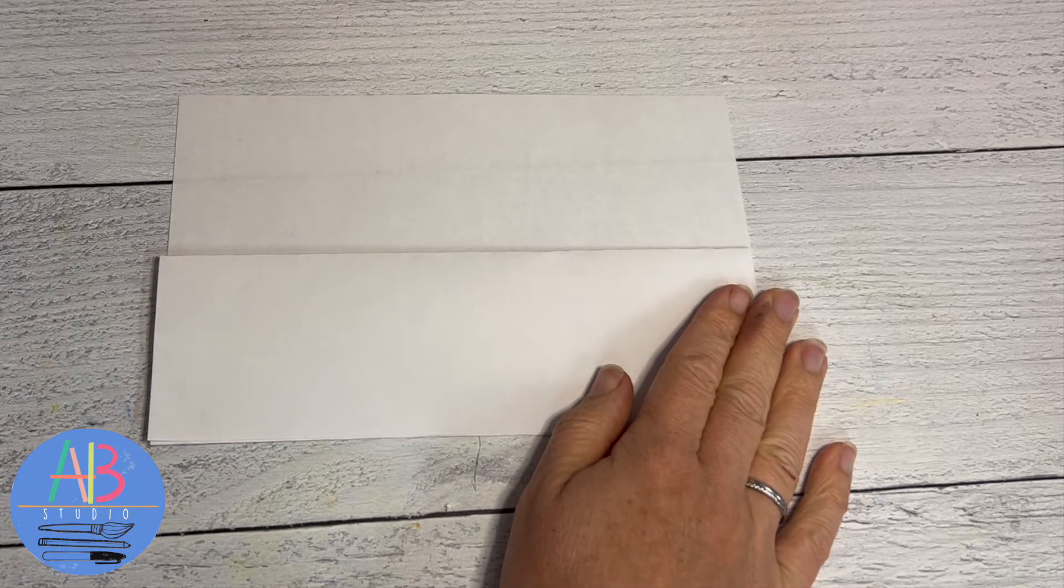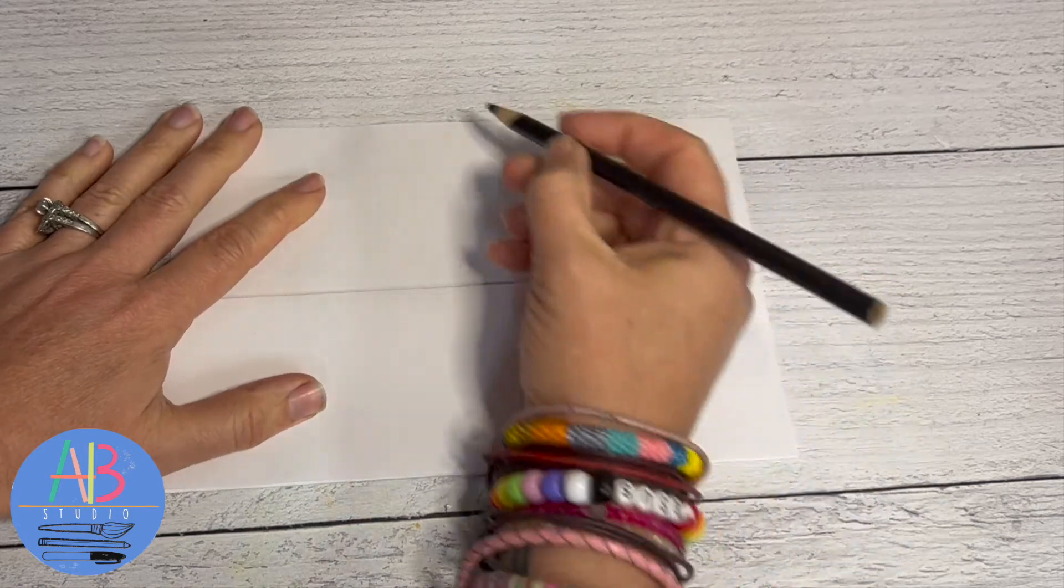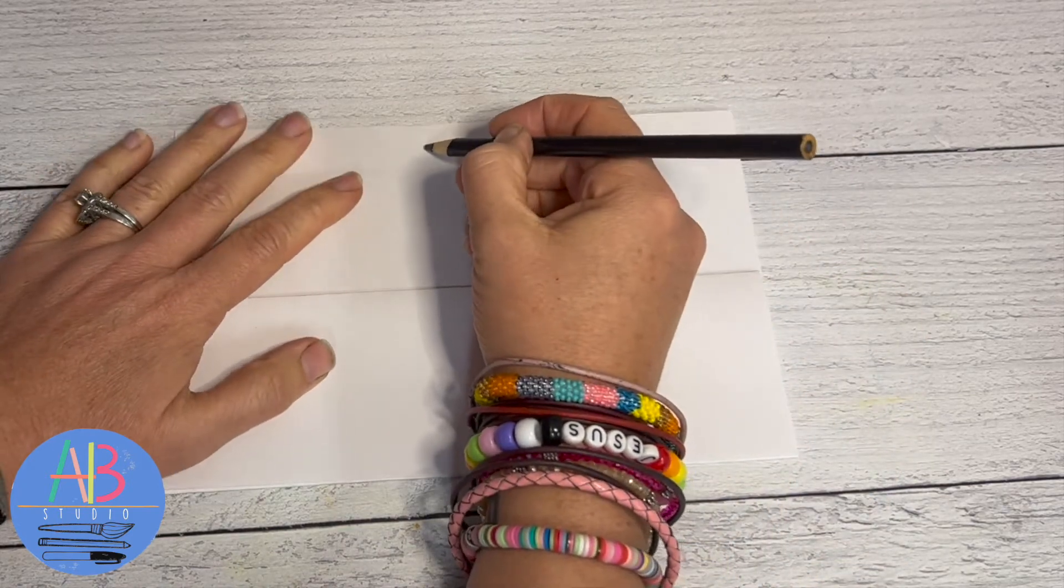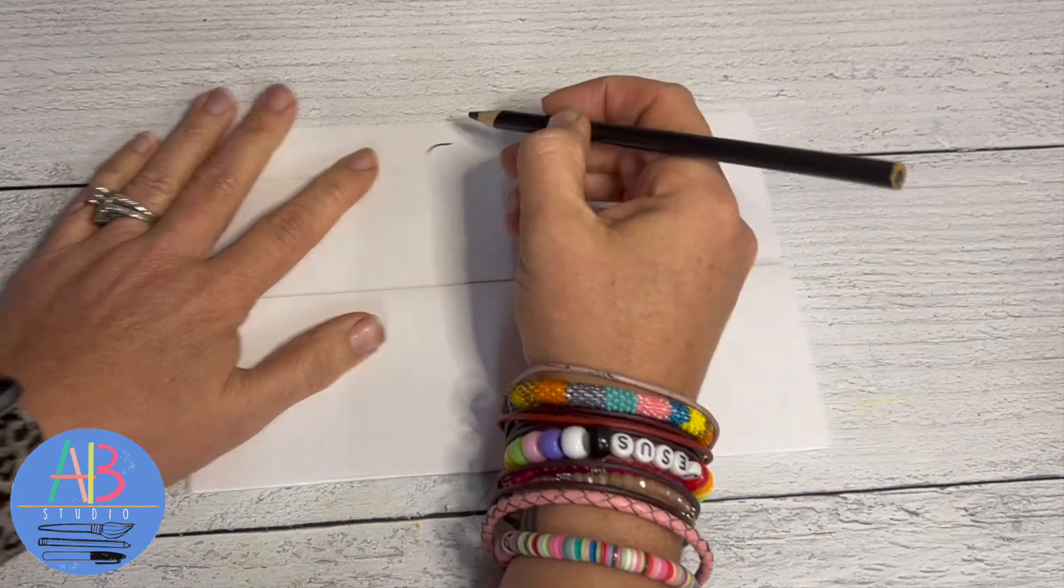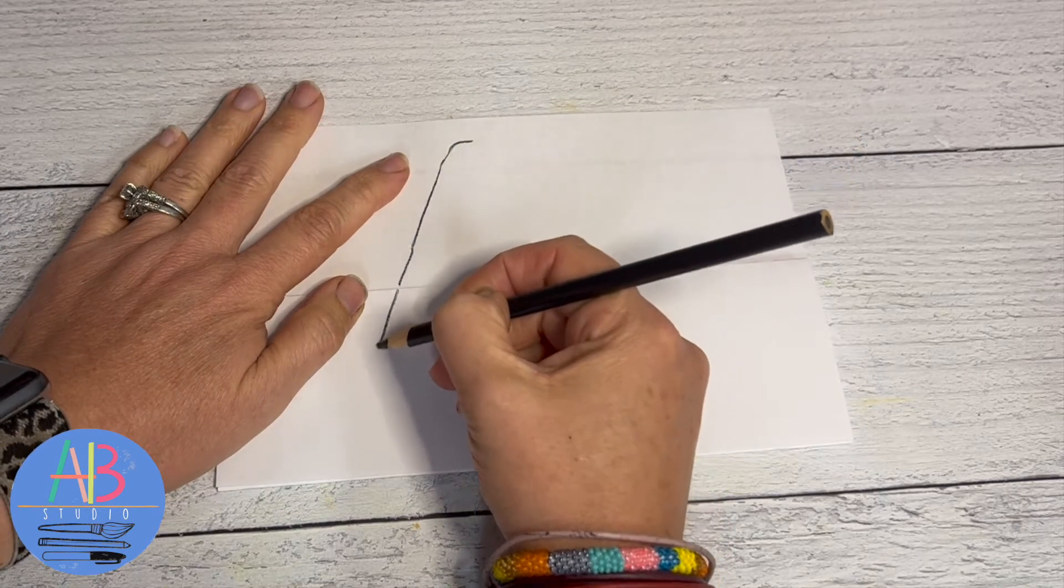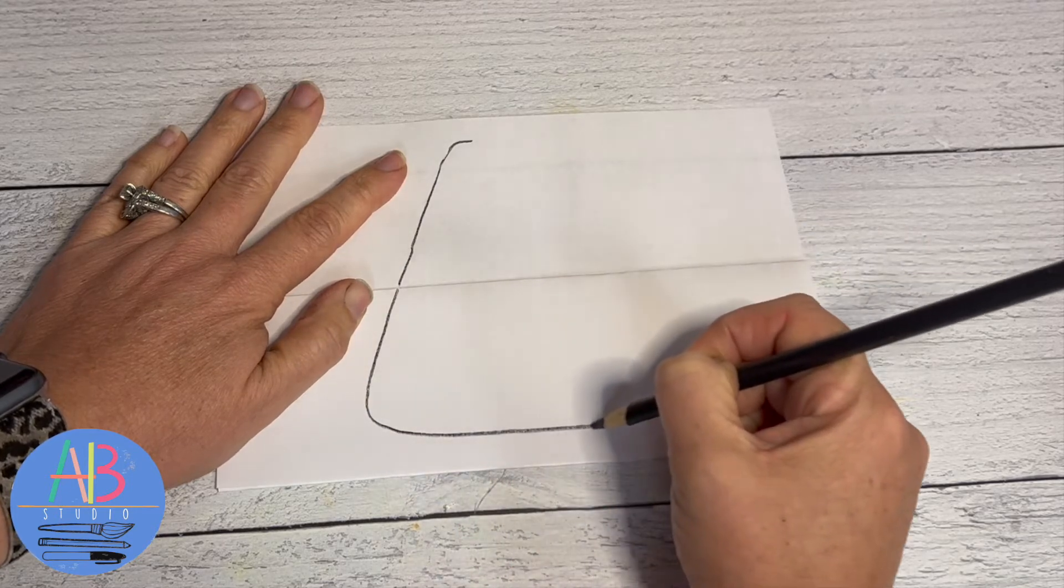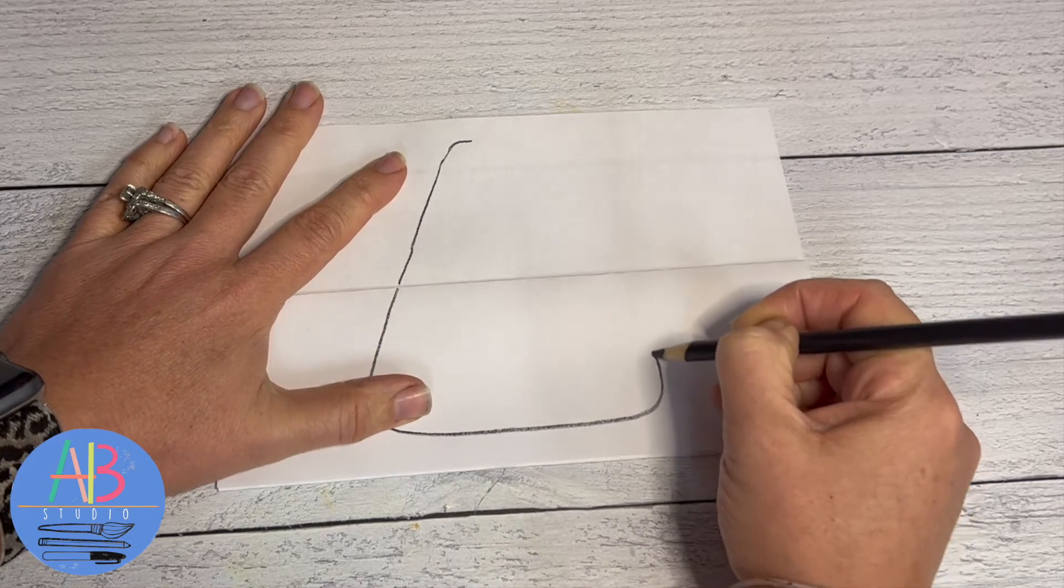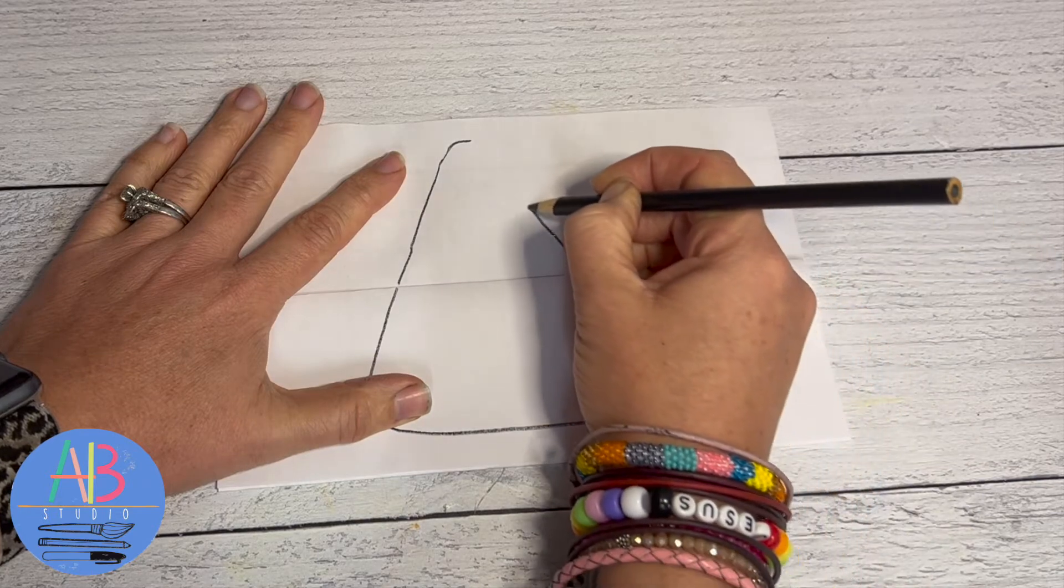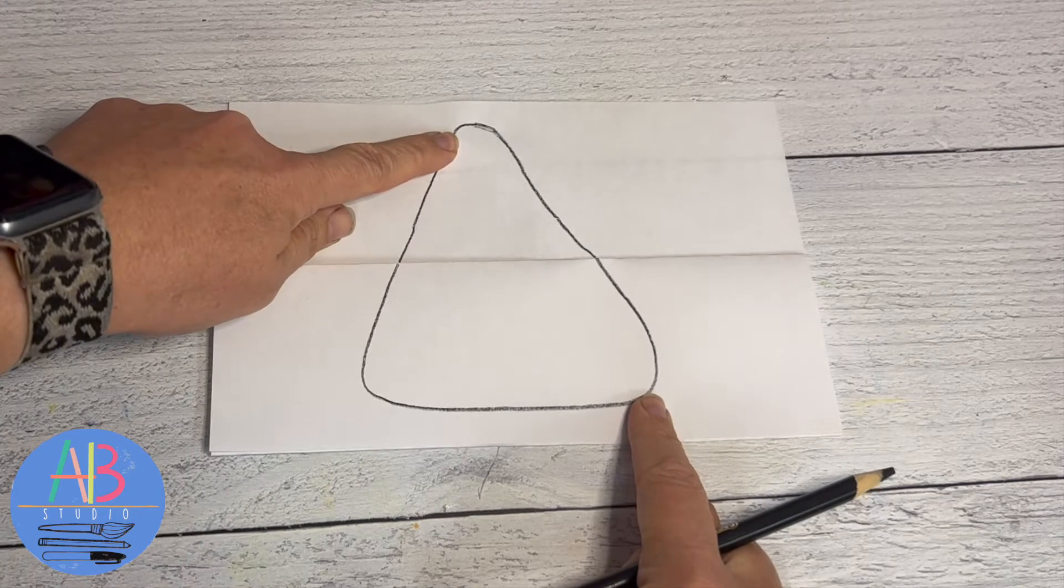I'm going to use a black colored pencil to draw our candy corn. Now a candy corn shape is a rounded triangle, so this is a diagonal line but I'm gonna curve, not make it a point. Curve, straight line, and then curve back up to the other diagonal.